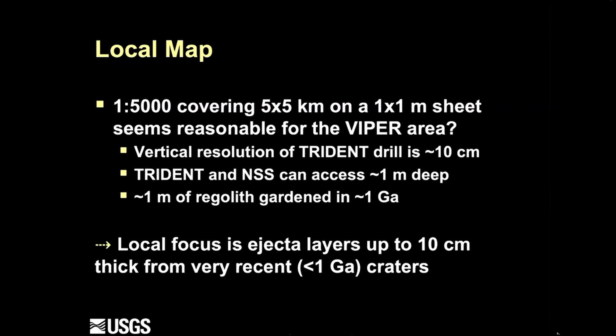For the most local map — the area we'll be driving around — we're going with a scale of 1:5,000, which means we can cover a five-by-five kilometer area on a one-by-one meter sheet. We also have to think about the vertical dimension. The TRIDENT drill and the neutron spectrometer can sense down to roughly a meter depth, so we're interested in what's in that top meter. The TRIDENT drill gives us a vertical resolution on the order of 10 centimeters, so we're really interested in stratigraphy down to about 10 centimeters in that top meter.